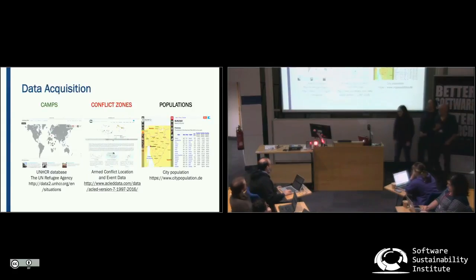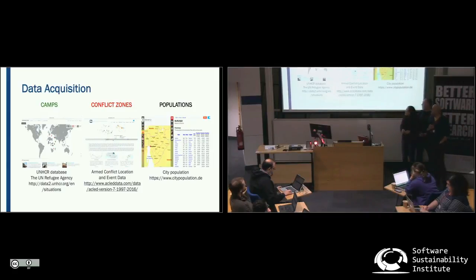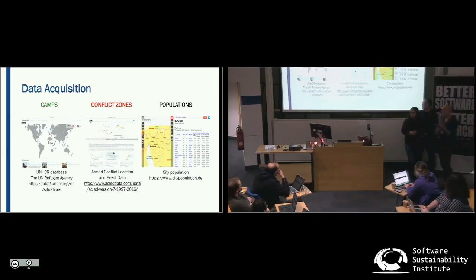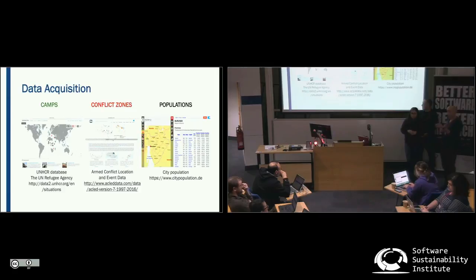The data comes from two sources. There's the UN High Commission for Refugees, which has a database. Previously, Diana had been downloading that data manually from the web. There is actually an API for that, but it's been updated recently and the documentation refers to a previous API. So I created an R package that allows you to download data for a country, find out which camps are within that country, and download the number of people within those camps.